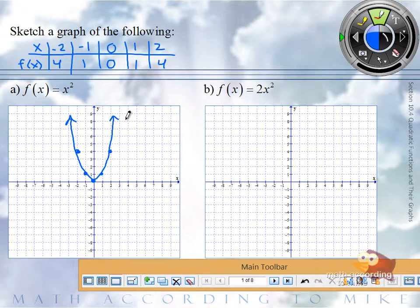So in part b, remember, when you multiply a function by a number bigger than one, it vertically stretches the graph. So what you're essentially doing is you're doubling, in this case, all of the y points. So instead of negative 2, 4, it's now negative 2, 8.